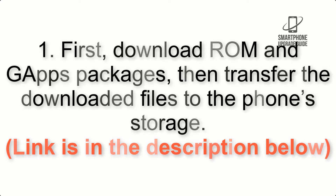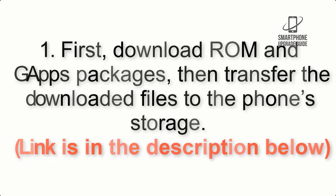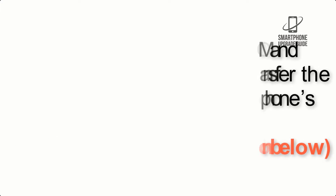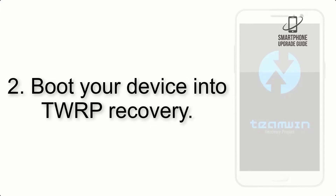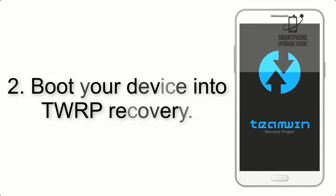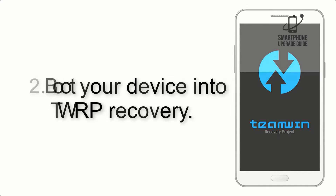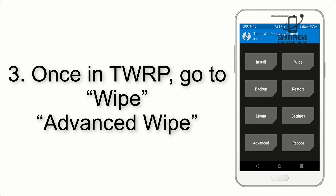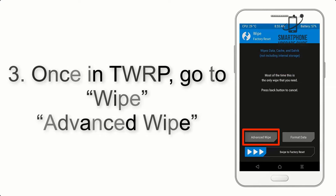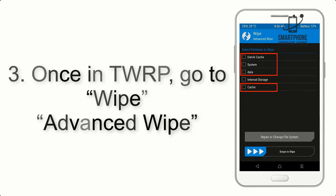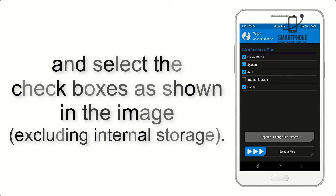Transfer the downloaded files to the phone storage — the link is in the description below. Step 2: boot your device into TWRP recovery. Once in TWRP, click on Wipe, then Advanced Wipe, and select the checkboxes as shown in the image.